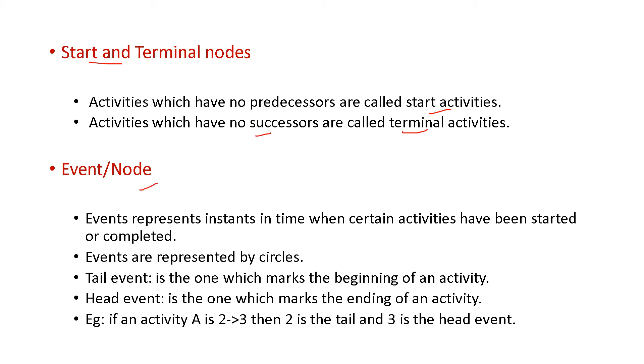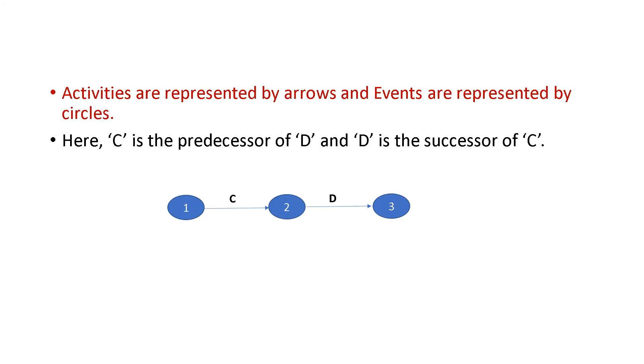Next is the term event or node. Events are represented by circles. In the previous example, we have seen two and three are the nodes. Two is a tail node and three is the head node. Tail is the one which marks the beginning of an activity and head is the one which marks ending of the activity. That is it is moving forward. So head. So that is but that is the end of the activity. That is that are the events and the nodes. Activities are represented by arrows and events are represented by circles.